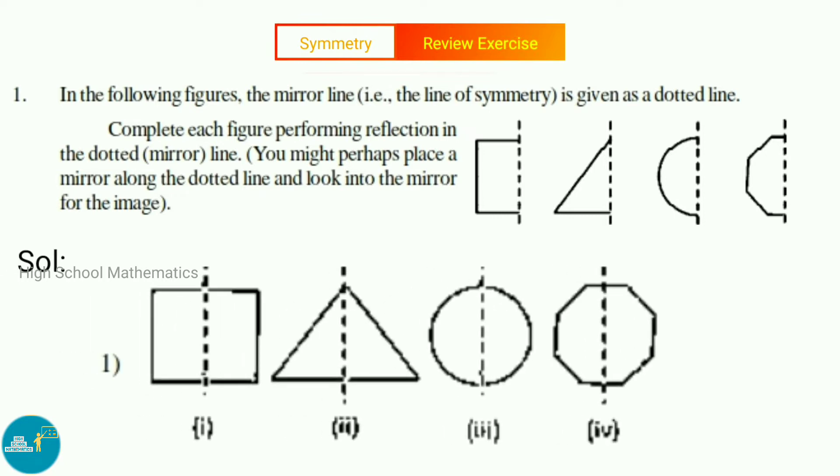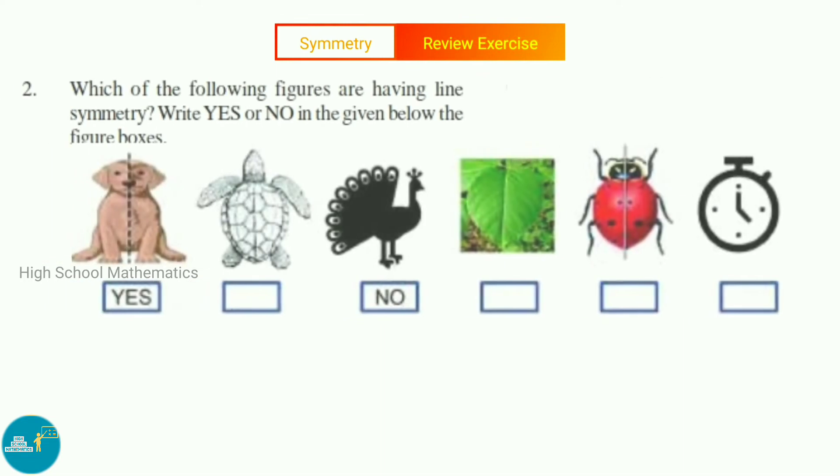Let us see the solution. First figure: after drawing the other part, it formed a square. Second figure: after drawing the other part of the figure, it formed a triangle. See the third figure: after drawing the other part, it formed a circle. See now the fourth one: after drawing the other part of the figure, it formed an octagon.